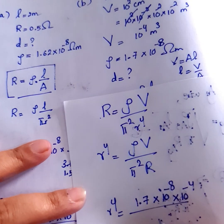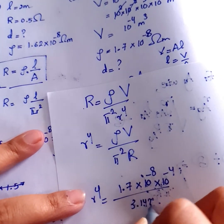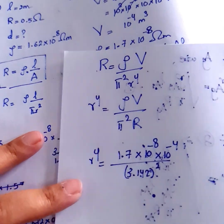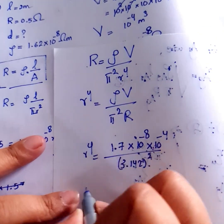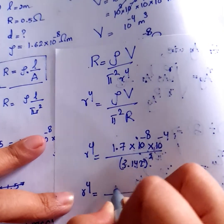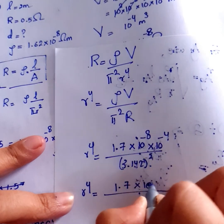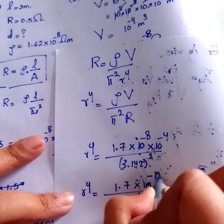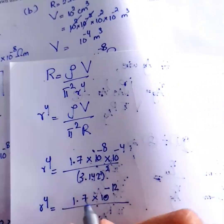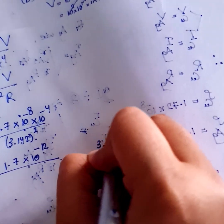1.7 into 10 power minus 8, and 10 power minus 4, by 3.142 squared. A to the power 4 equal to 1 by 7 into 10 power minus 8, minus 4, so minus 3, times 3.142 squared.